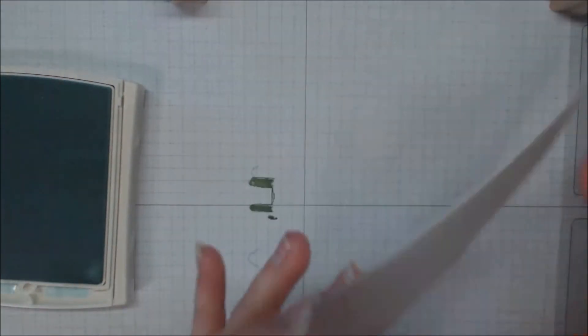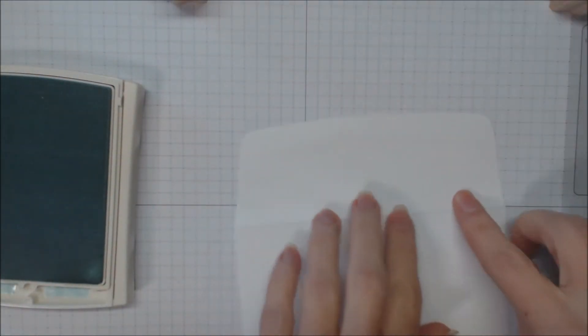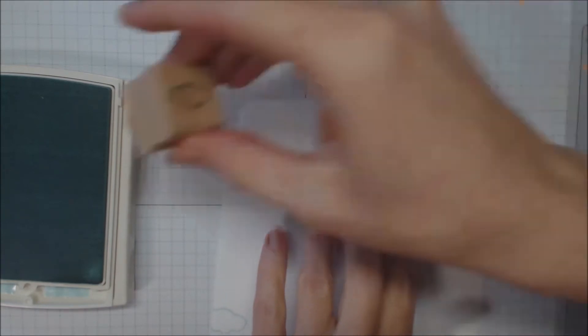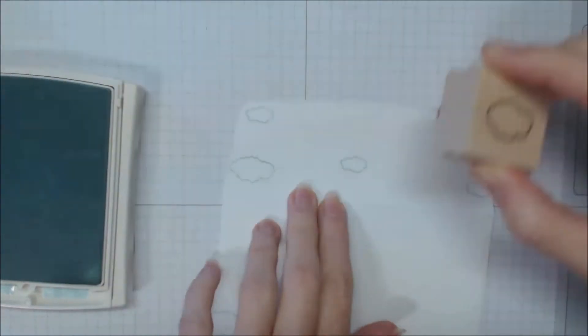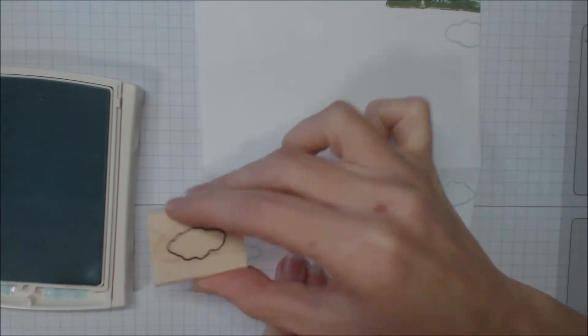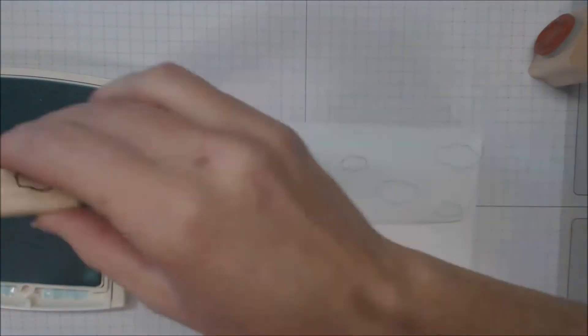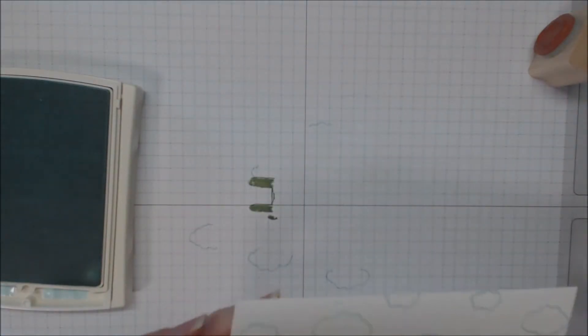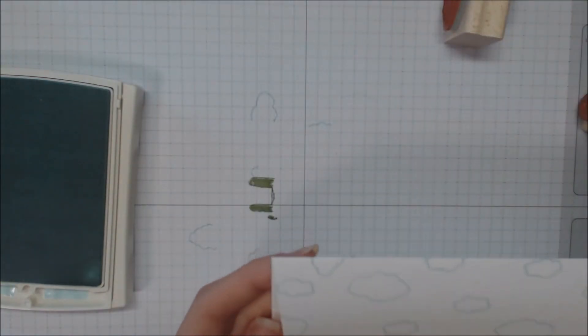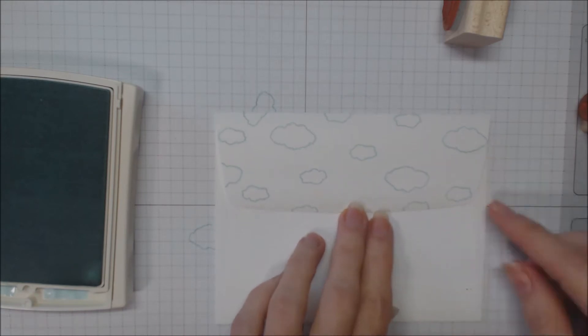And then on that back flap, I'm going to stamp clouds all around there randomly. So I've gone ahead and sped this up so that you can see how I'm moving the envelope around and stamping the clouds in different directions, making sure that some of the clouds are going off the edges of the envelope.